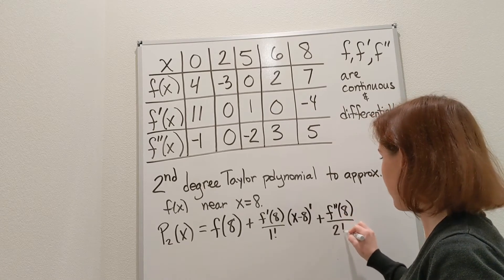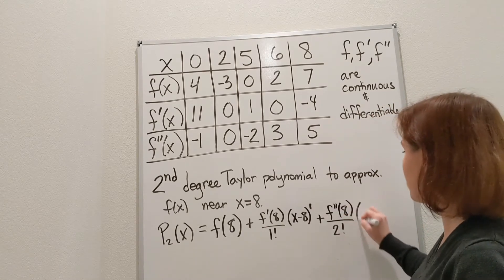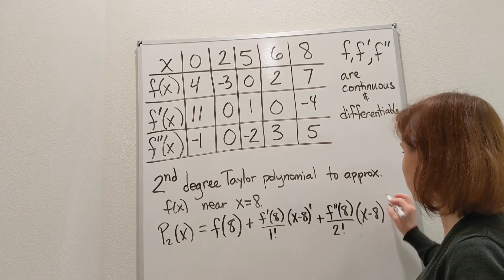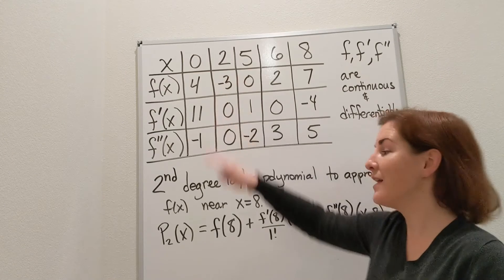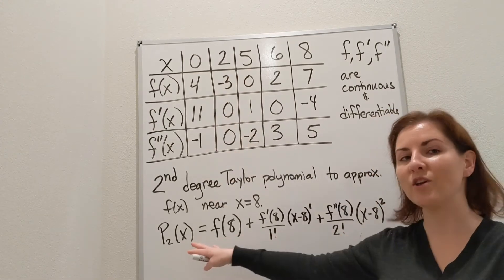We're going to divide by 2 factorial this time, and multiply by x minus 8 to the second degree. So I'm going to plug in those values from the table, but this right here is just our Taylor polynomial formula.